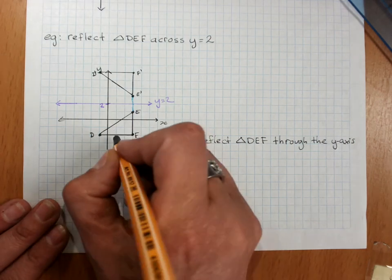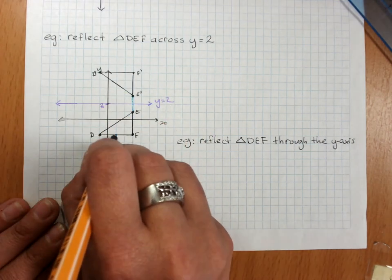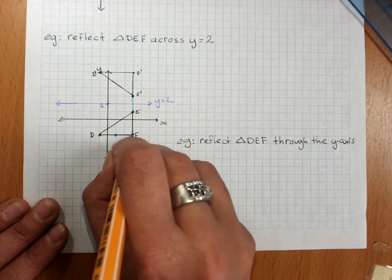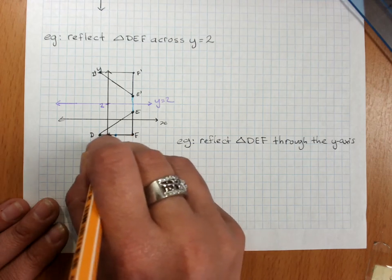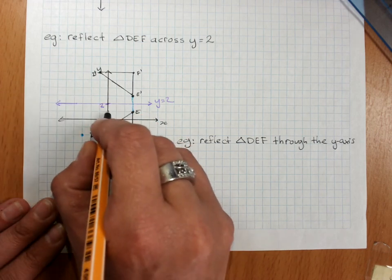D would come to here, one grid square to the axis and one grid square out the other side. F, three points to there, so three out to here. E, three and three.